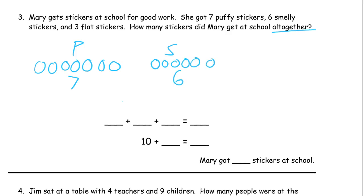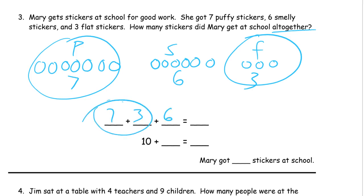And three flat stickers. F for flat. One, two, three. Seven and three are the parts that make ten here. So we'll add those first. Seven plus three, and then the six. The seven and the three together make the ten. Ten and six, sixteen. Mary got sixteen stickers at school.